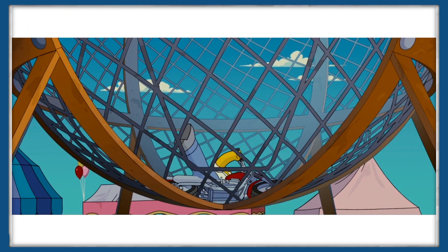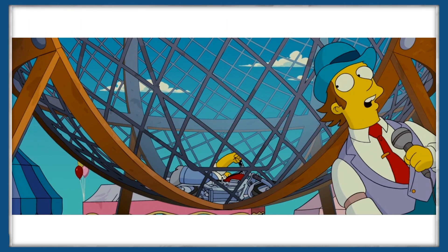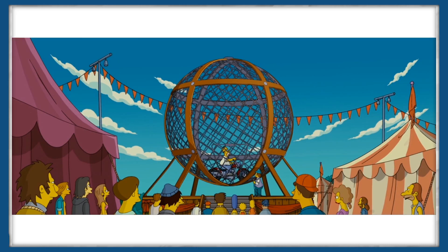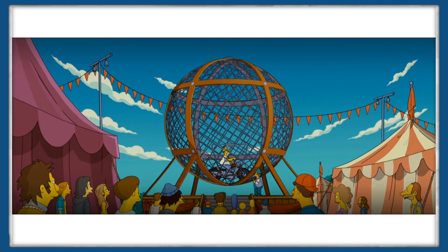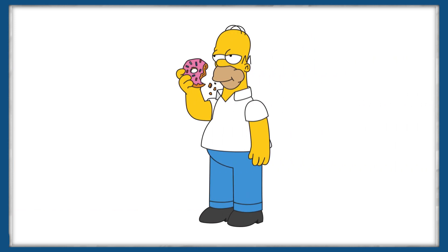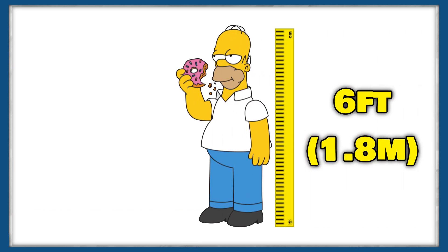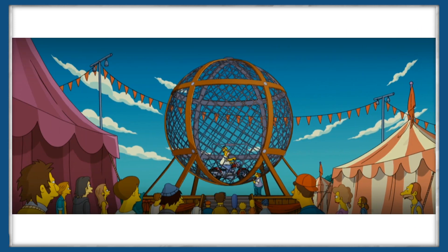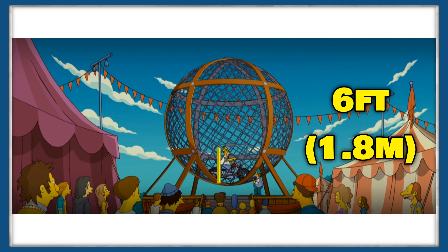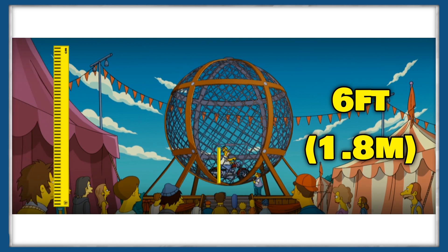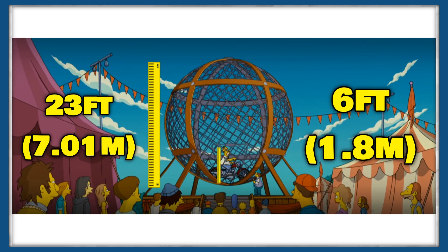Fortunately, we get several looks at the dome with Homer inside from a frontal perspective, which means it'll be pretty easy to get our radius. We know that Homer is roughly 6 feet tall, and he's tall enough to steady the bike when he's on it, so we can assume the height of Homer plus the bike is around 6 feet. From this, we can find that the ball of death is about 23 feet in diameter, or roughly 7 meters.